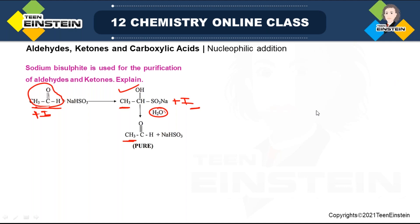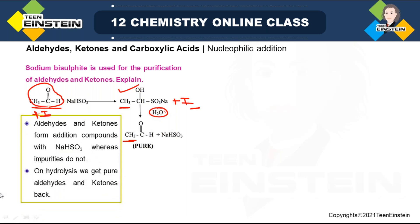Hello everyone. Last day we have seen that we started the chemical properties of aldehydes and ketones. There are different types of chemical properties possible for aldehydes and ketones. The first type we have seen is nucleophilic addition. Under this, we have already discussed two reactions: addition of CN⁻ ion and addition of NaHSO₃. Regarding NaHSO₃, one application of this reaction is that it can be used for purification of aldehydes and ketones.